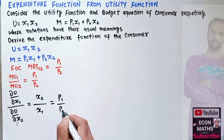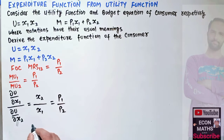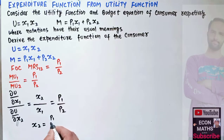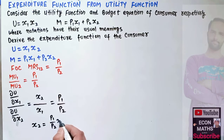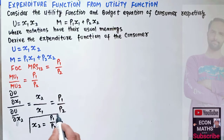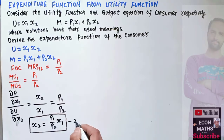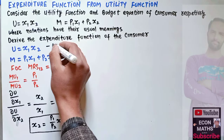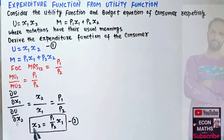Solving this for x2: x2 = (p1/p2) times x1. Let's call this equation 2, and the budget equation is equation 1.